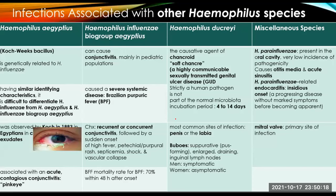Infections associated with other Haemophilus species include H. aegyptius, H. influenzae biogroup aegyptius, H. ducreyi, and other miscellaneous species. The Koch-Weeks bacillus is genetically related to H. influenzae. Because of their similar identifying characteristics, it is hard to differentiate H. influenzae from H. aegyptius and H. influenzae biogroup aegyptius. This organism was observed by Koch in 1883 in Egyptians with conjunctivitis exudates, and hence the species name H. aegyptius is associated with acute contagious conjunctivitis or pink eye.